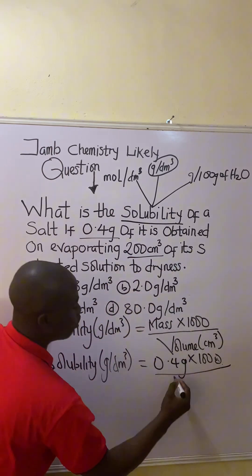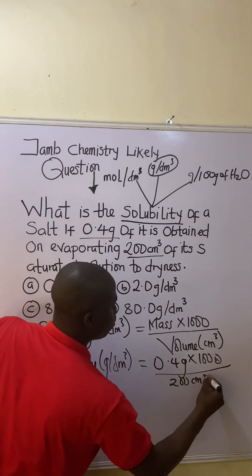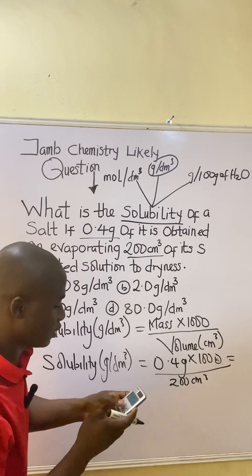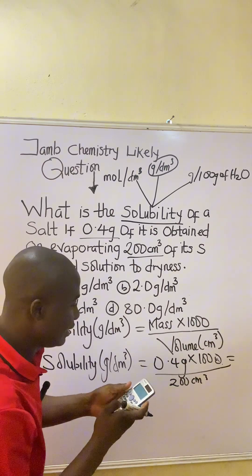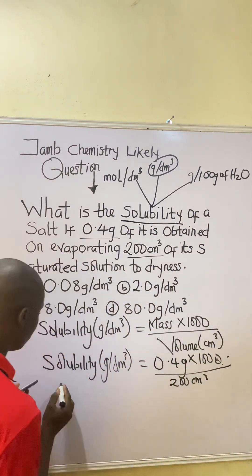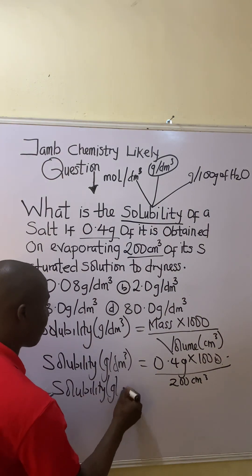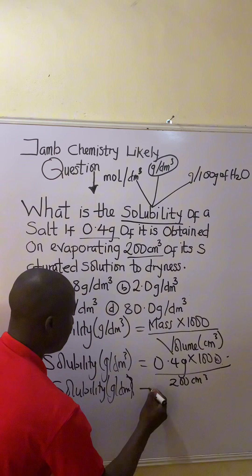All over what's the volume in the question? The volume in the question was 200 cm³, so here's 200 cm³. So 0.4 times 1000 over 200, that is 2.